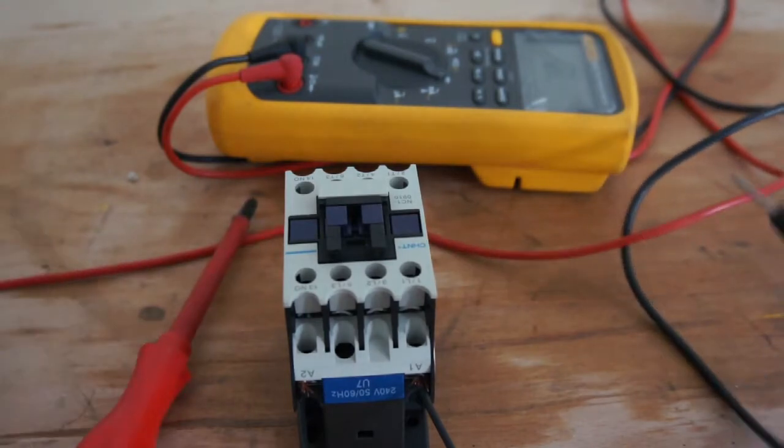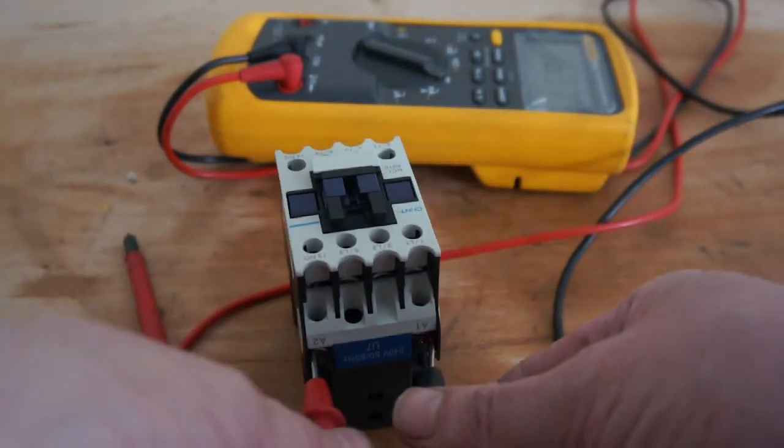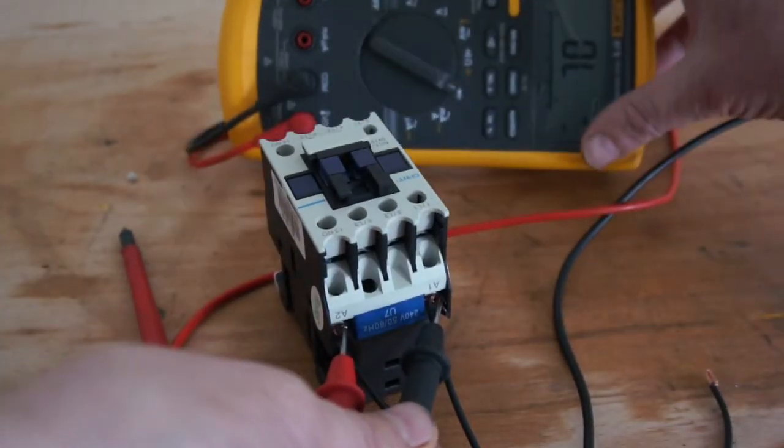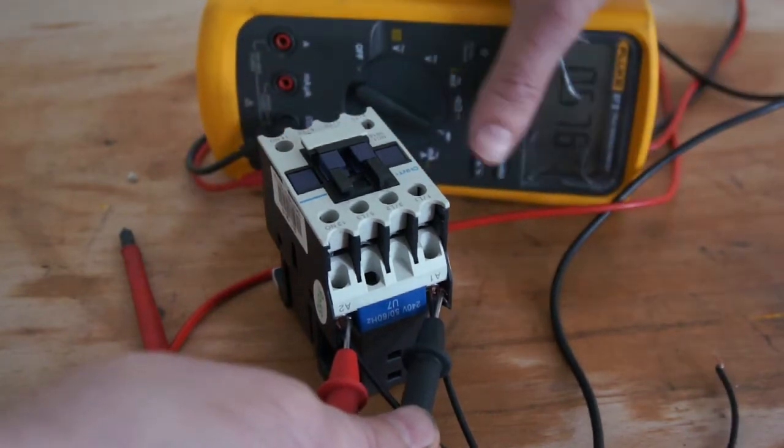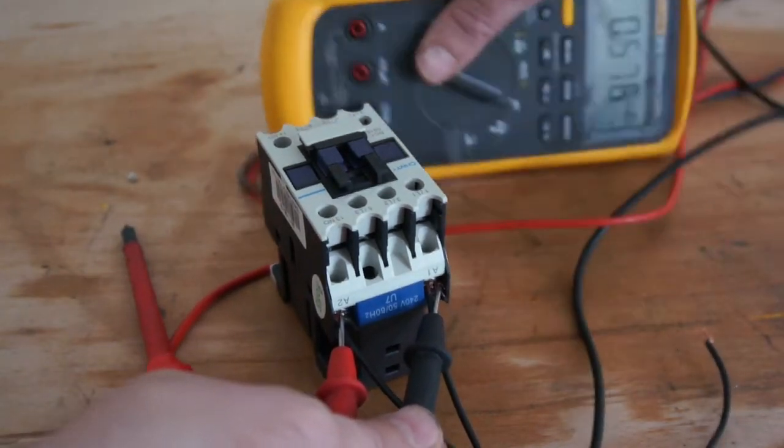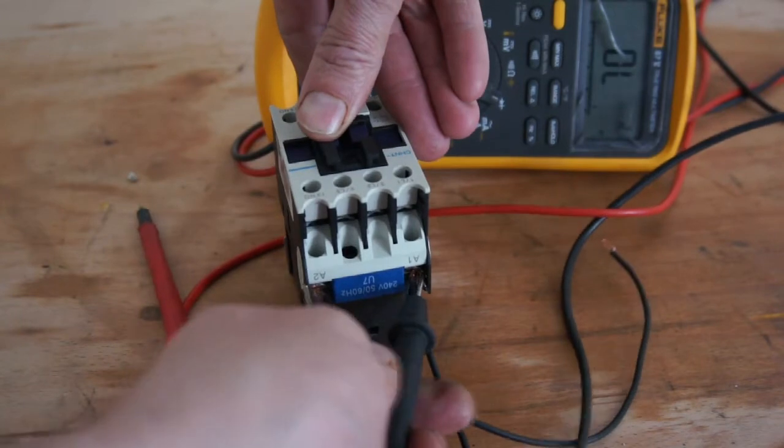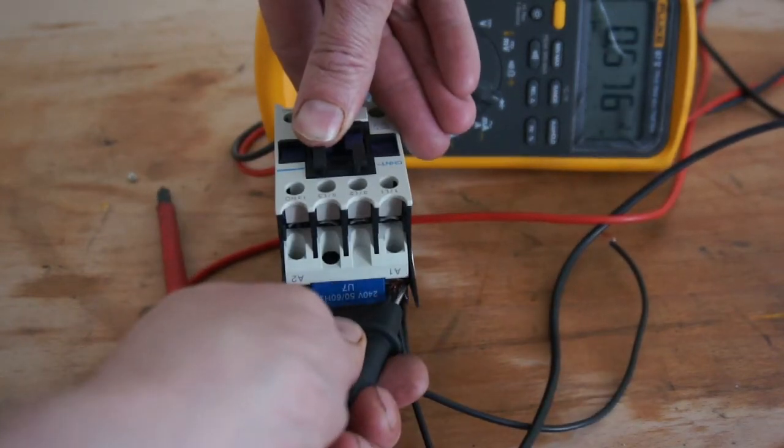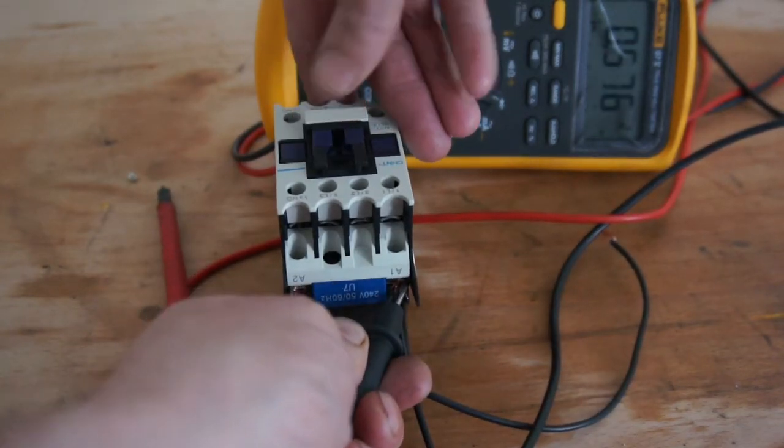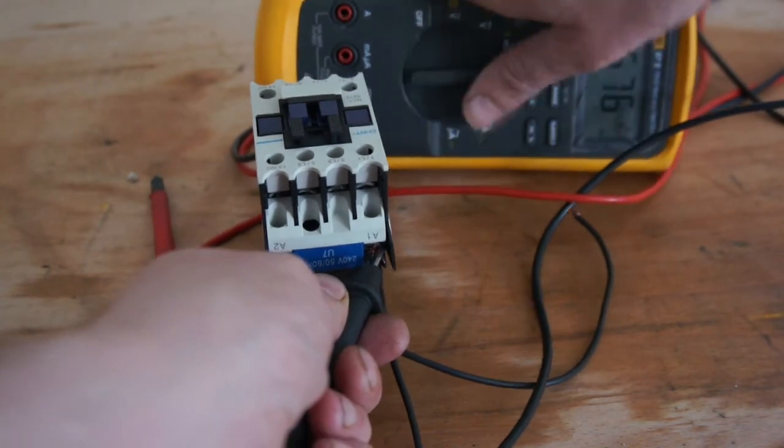Check the coil, you just do the same but test resistance of the coil. So that's on diode mode.